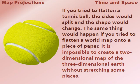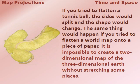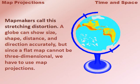If you tried to flatten a tennis ball, the sides would split and the shape would change. The same thing would happen if you tried to flatten a world map onto a piece of paper. It is impossible to create a two-dimensional map of the three-dimensional Earth without stretching some places. Map makers call this stretching distortion.